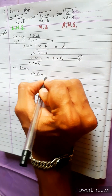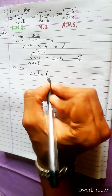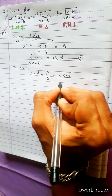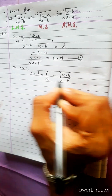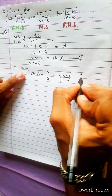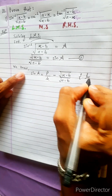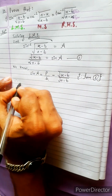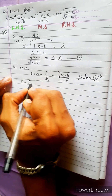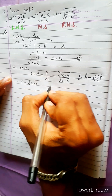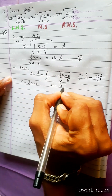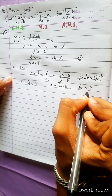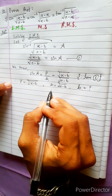We know that sin A equals perpendicular divided by hypotenuse. From equation 1, we have (x minus b) divided by (a minus b), so perpendicular P equals square root (x minus b) and hypotenuse H equals square root (a minus b).